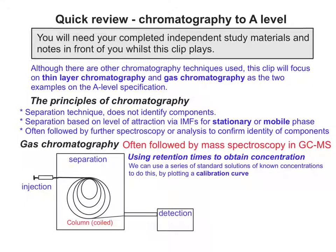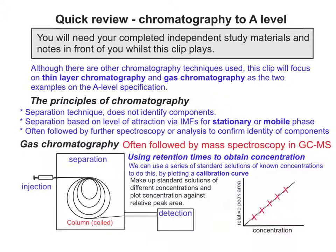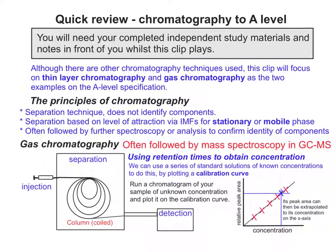Even though chromatography doesn't give us concentration directly, we can determine this by plotting a calibration curve. You make up a series of standard solutions at different concentrations and run each one through the chromatography machine, which gives you a relative peak area on the chromatogram. The relative peak areas go on the y-axis and concentration goes on the x-axis, giving you a straight line. Using the peak area of your sample of unknown concentration, you can use the calibration curve to extrapolate back to the concentration on the x-axis and calculate its correct concentration.